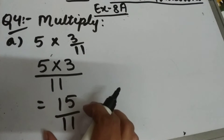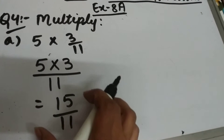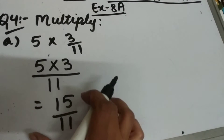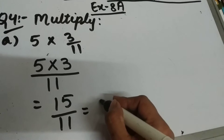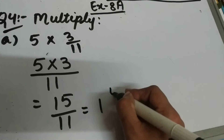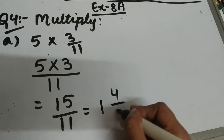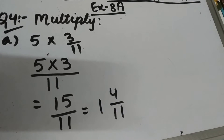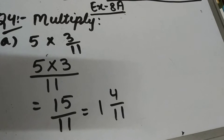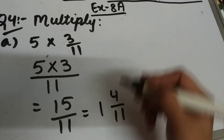This is an improper fraction, so convert it into a mixed fraction. This will be 1 and 4 upon 11. Okay, this is part a of question number 4.